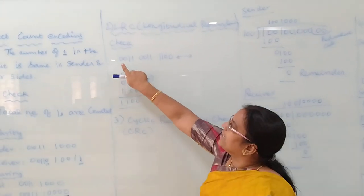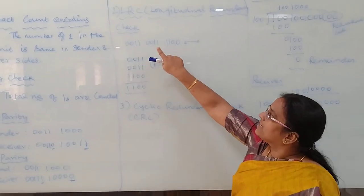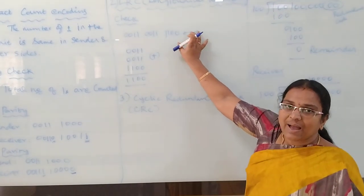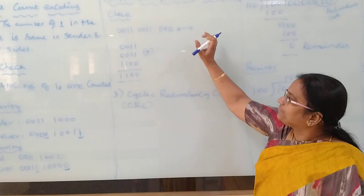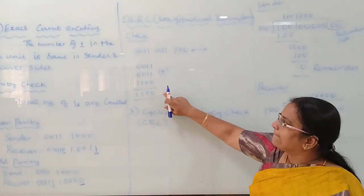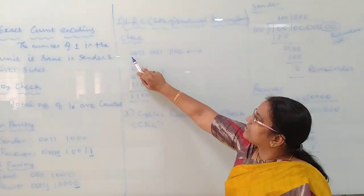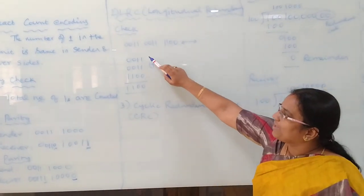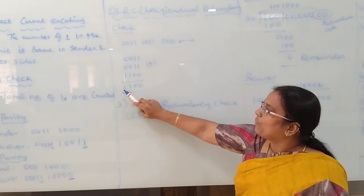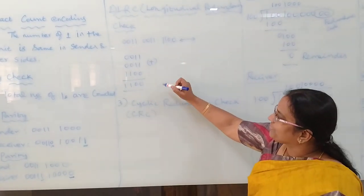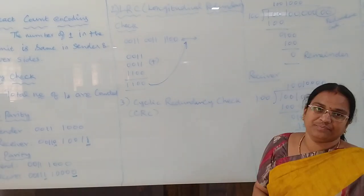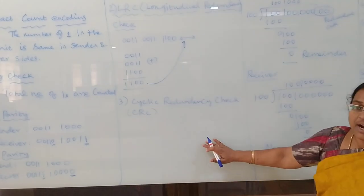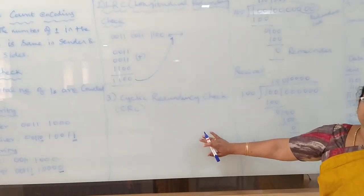Next we see LRC, that is longitudinal redundancy check. Consider the data 0011 0111 1100. In this method we add a redundant code by adding all these numbers column by column — so 0011 plus 0011 plus 1100 gives 1100. This redundant code is appended to the data. This is called the longitudinal redundancy check.